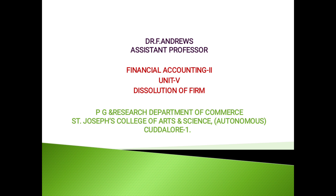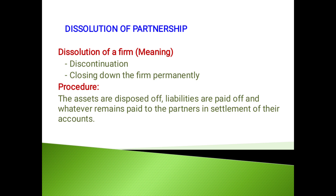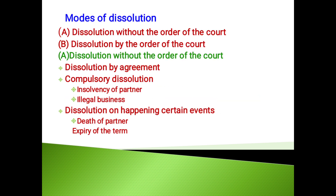Dissolution of the firm means that the business of the firm is brought to an end. Assets are disposed of, liabilities are paid off, and the accounts of all the partners are also settled. The Partnership Act 1932, Section 39, says the dissolution of partnership between all the partners of a firm is called the dissolution of the firm. Simply said, it is the discontinuation or closing down of the firm permanently.